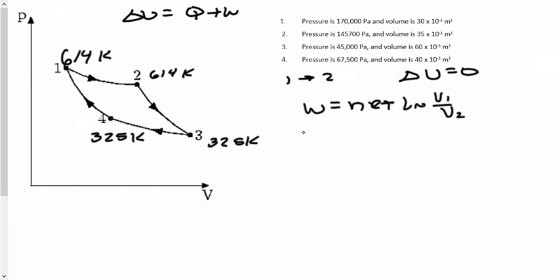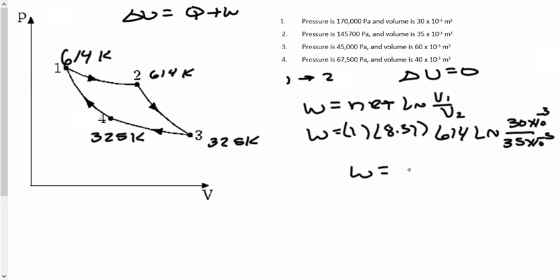So here it goes. So W is equal to 1. We're going to assume 1 mole again of the gas times 8.31 times the temperature of the isotherm, which is 614 times the natural log. Our volume 1 is 30 times 10 to the minus 3 divided by 35 times 10 to the minus 3. And the work turns out to be negative 787 joules.